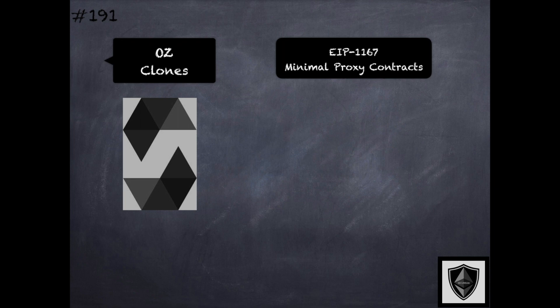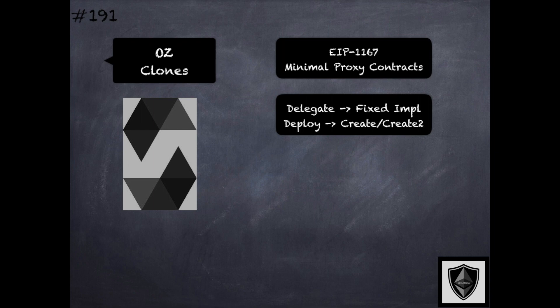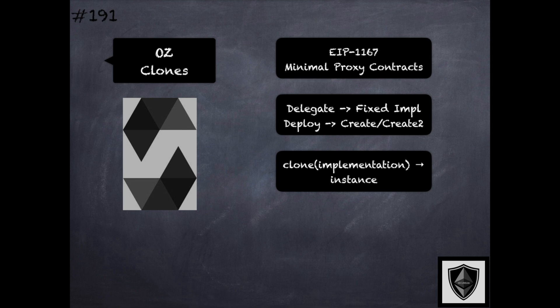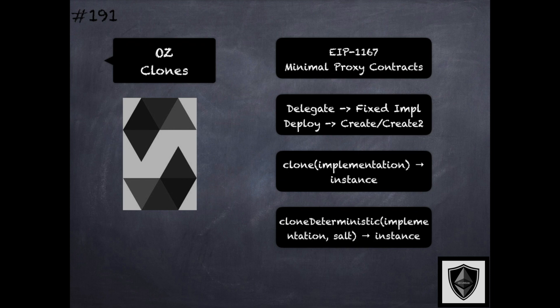The clones library helps implement minimal proxy contracts as specified by EIP 1167. In this case, all implementation contracts are clones of specific bytecode where all calls are delegated to a known fixed address. Deployment can be done traditionally using create or deterministically using create2. Corresponding to these two options, there are two functions: the clone function that clones the implementation and returns the address of the instance deployed using create, and the clone deterministic function that takes the implementation and a salt and returns the instance of the clone created using create2.